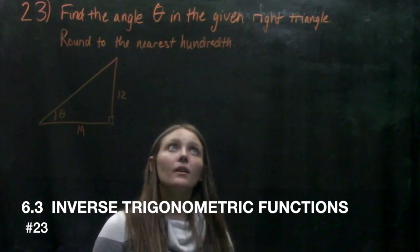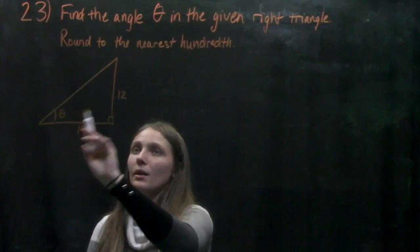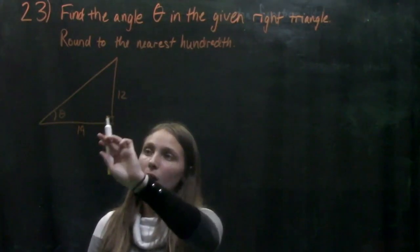So 23 says, find the angle theta in the given right triangle, round to the nearest hundredth. So we're given this triangle with angle theta and side 12 and side 19.